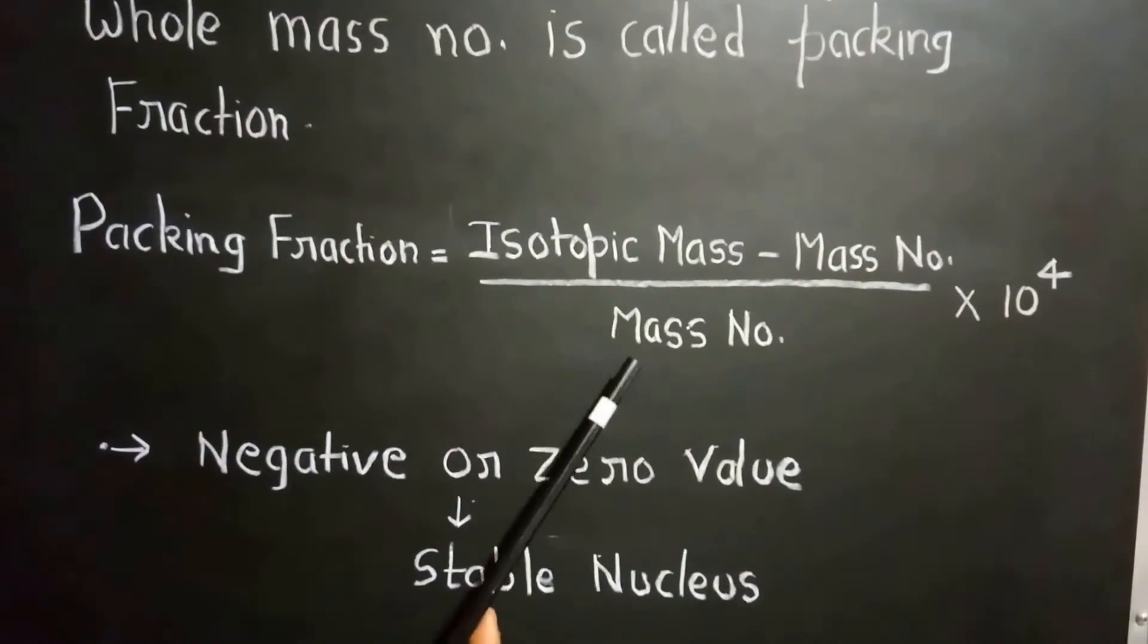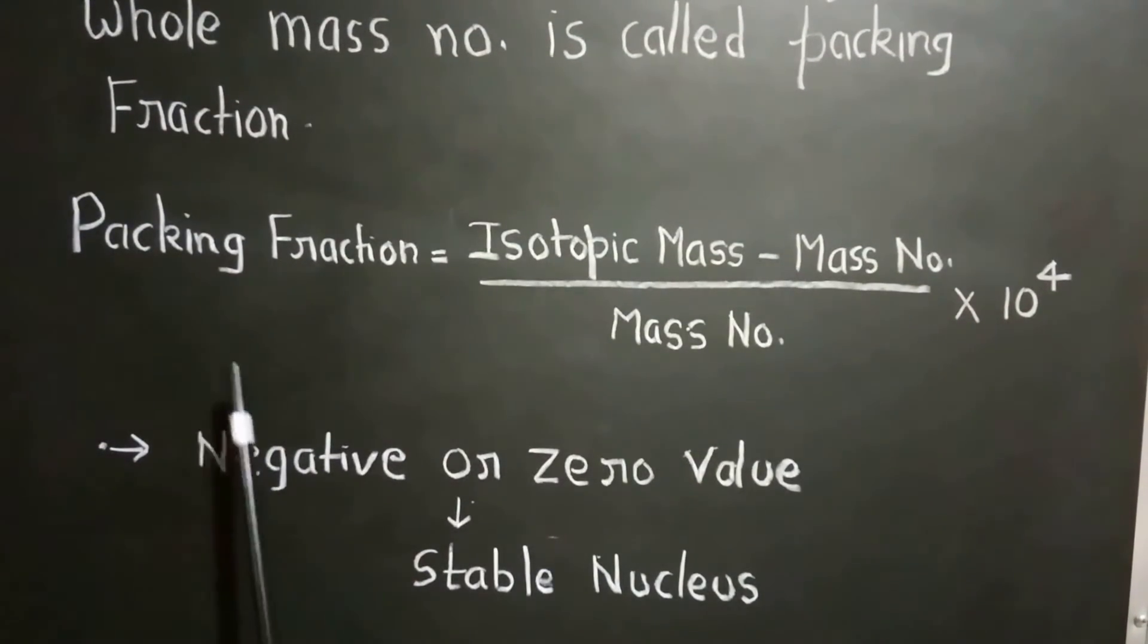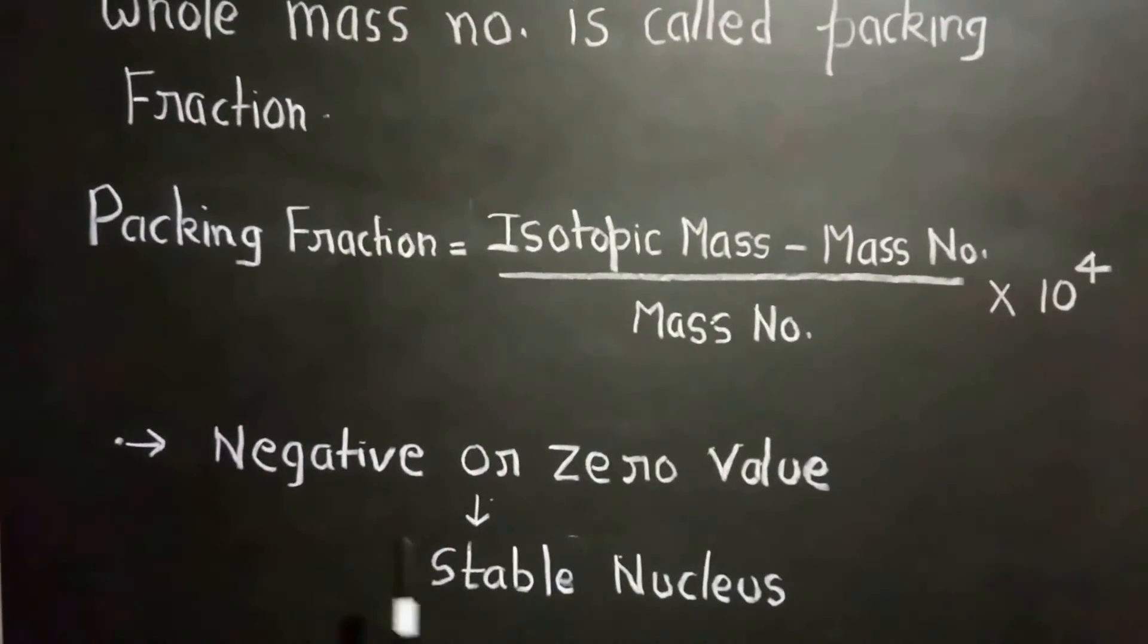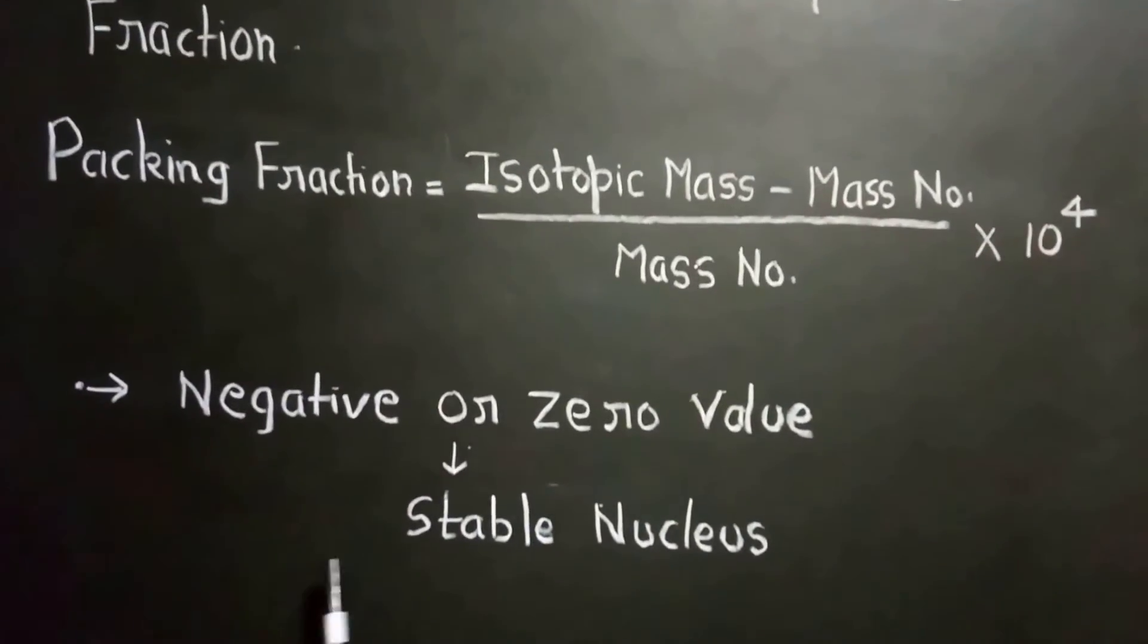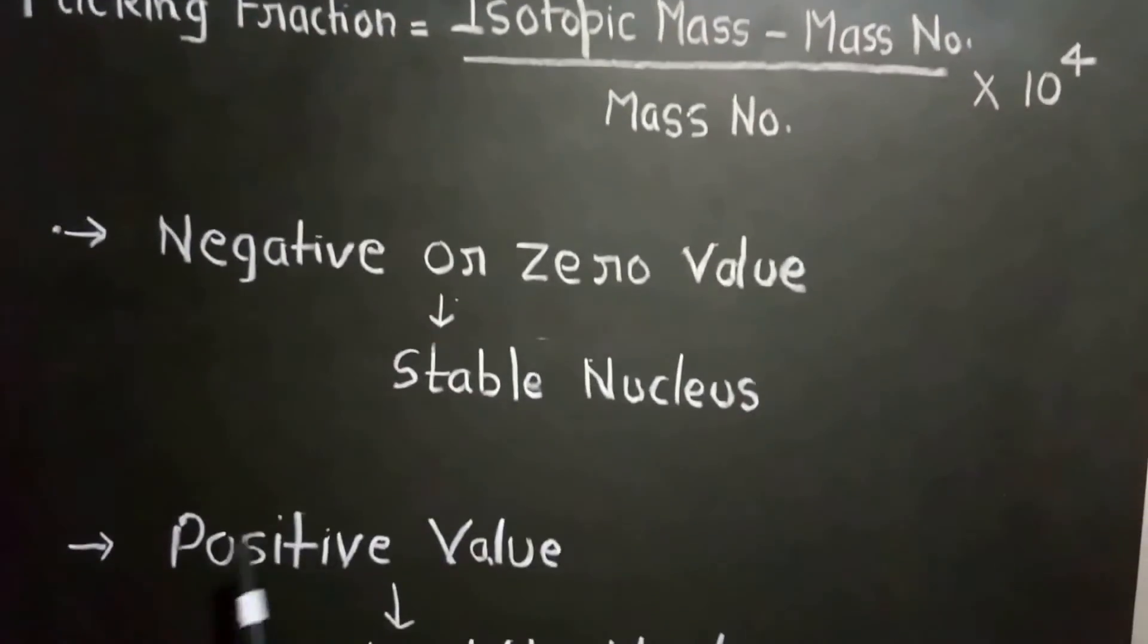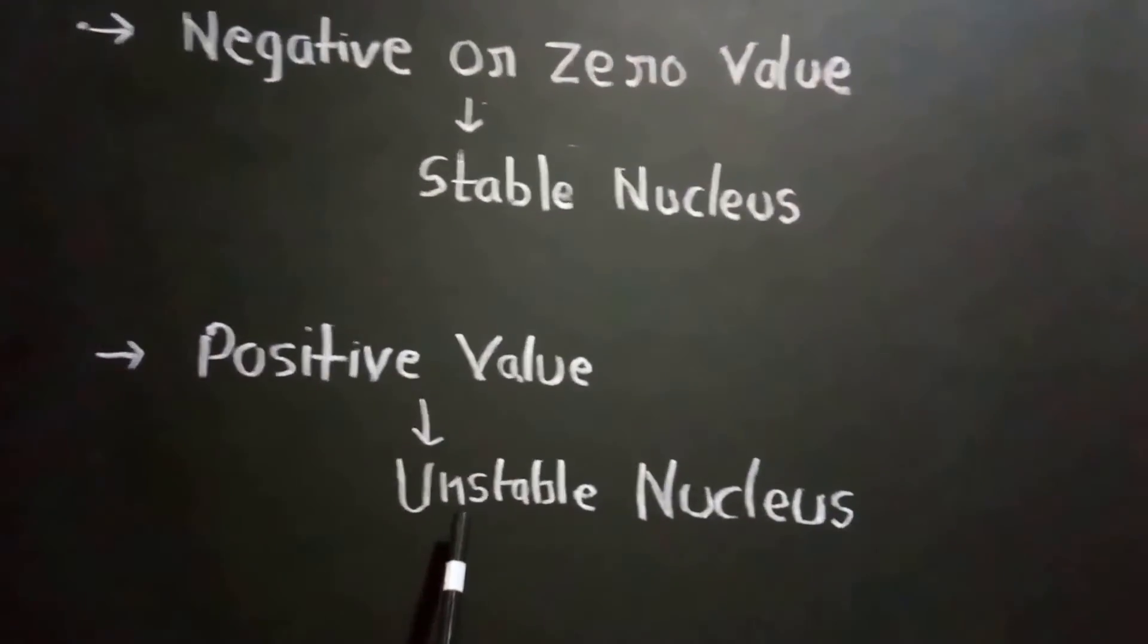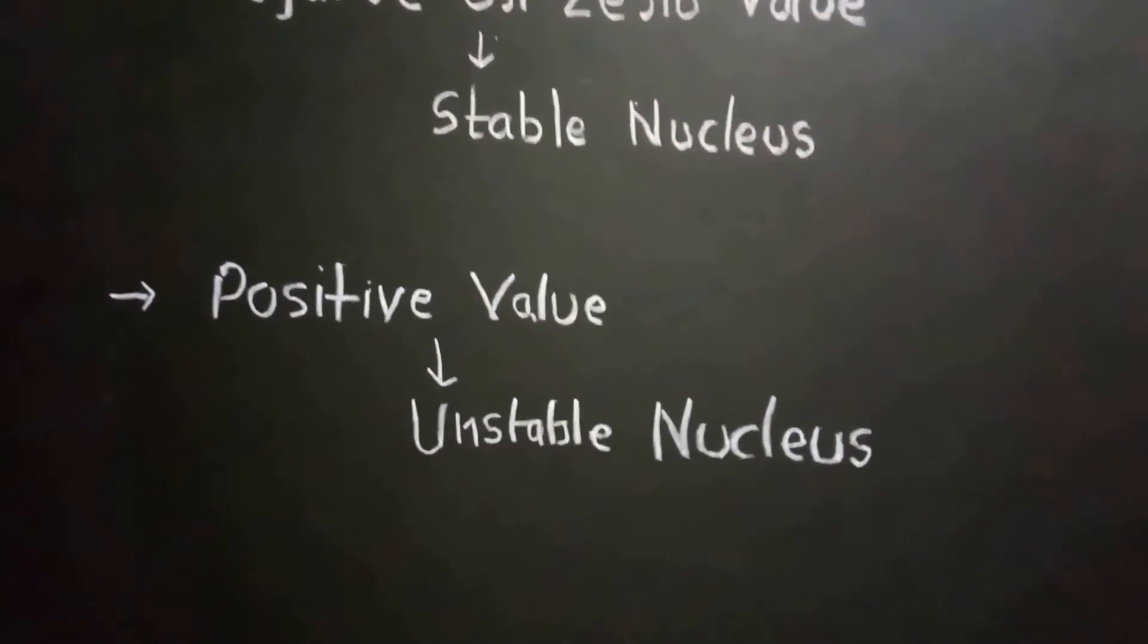Packing fraction is equal to isotopic mass minus mass number upon mass number into 10 raised to the power 4. From this formula, we can know that if packing fraction is negative or it is zero valued, the nucleus is stable. But when packing fraction is positively valued, the nucleus is found unstable. So this is all about the nuclear stability.